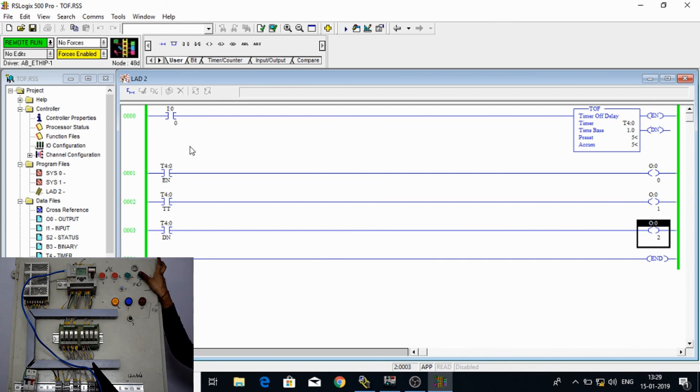So let me repeat. You can see rung is true, enable bit is there, done bit is there. So I have my output 0 and 2 will start and after that when I release this input timer will get start, enable bit is 1, TT bit is 1 and done bit will become 0 after 5 seconds.